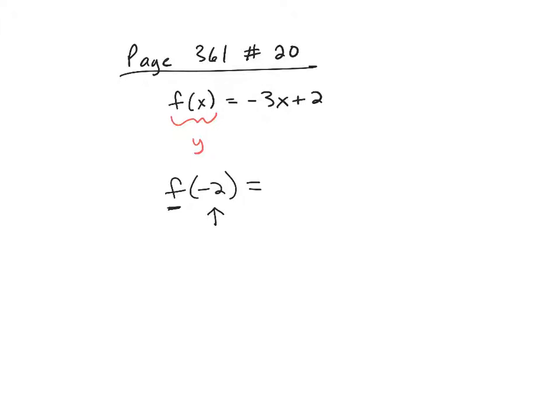If I take my function f, which is written above here, I'm going to take out the x and I'm going to put in a -2. So what I'm really doing is I'm taking my function rule, taking out the x and putting in a -2. Then I'm going to follow my order of operations, which tells me that I need to multiply before I add.